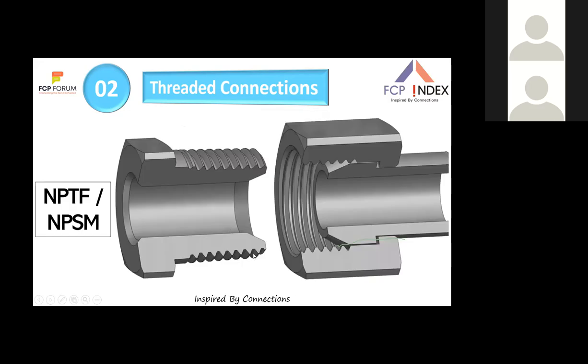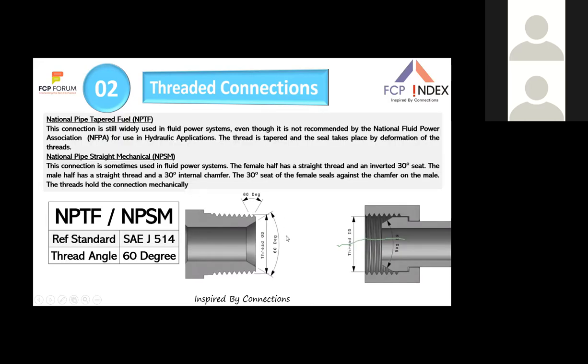NPT — National Pipe Thread, also called NPTF — is a tapered thread still widely used in fluid power systems, though not recommended by the National Fluid Power Association for hydraulic applications. The thread is tapered and the seal is made by deformation of the thread as it is driven into the port. The standard is SAE J514 and the thread angle is 60 degrees.